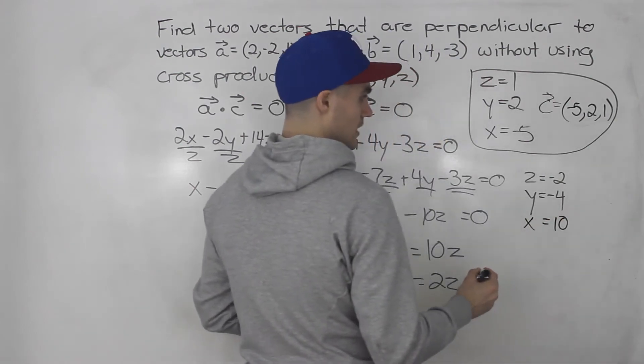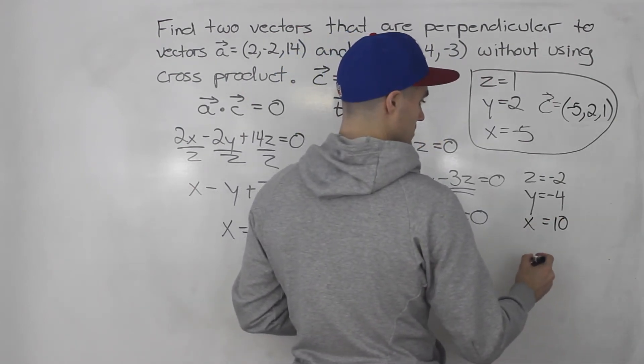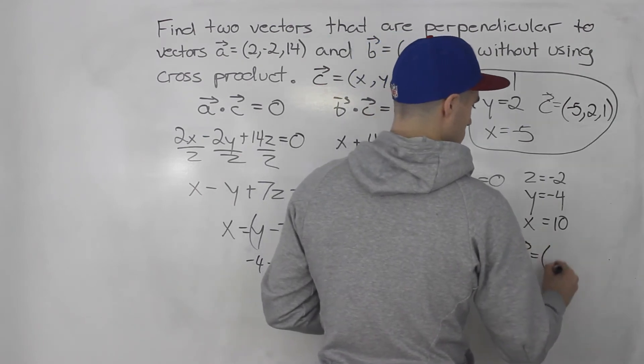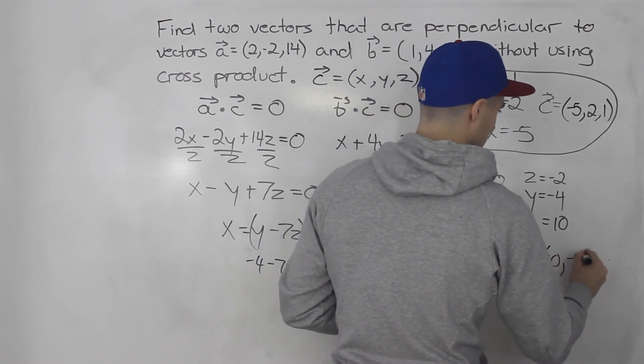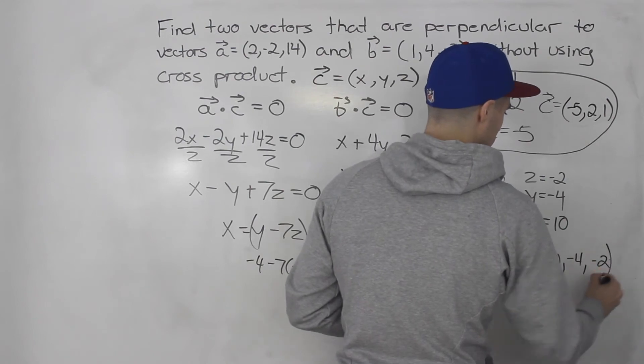So that there is another case. So vector C can also be 10, negative 4, and negative 2.